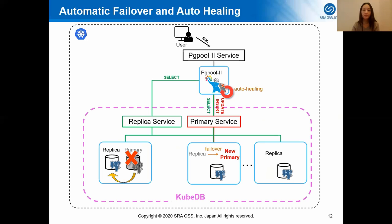Let's check the behavior when a failure occurs. KubeDB can check the health of Postgres pods constantly. When KubeDB detects a failure, it will trigger a failover. If the primary goes down, one of the replicas will become the new primary and the old primary will be restarted as standby. Kubernetes also has auto-healing capability — if Kubernetes detects a failure of the PGPool pod, it will restart PGPool automatically.